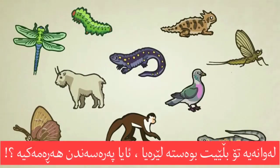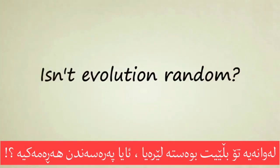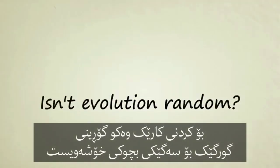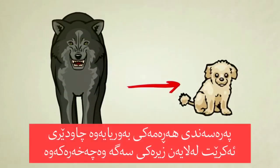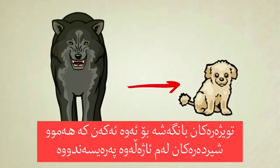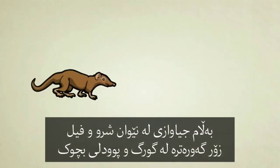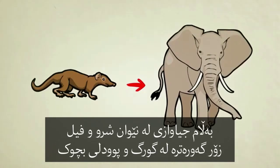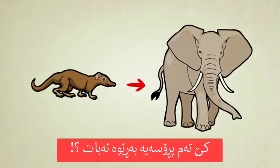Now you might be saying: wait a minute — isn't evolution random? To do something functional like turn a wolf into an adorable mini poodle, random evolution had to be carefully guided by an intelligent dog breeder. Researchers claim that all mammals evolved from an ancient shrew-like creature, but the difference between a shrew and an elephant is far greater than that of a wolf and a poodle. Who guided that process? Who was the breeder?